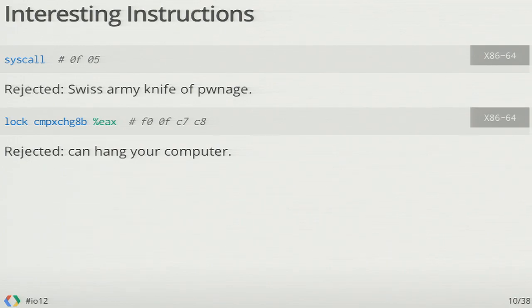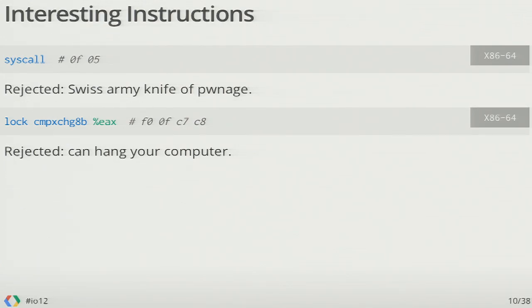Another interesting instruction — a fairly old but famous example — is the foof instruction, called because it starts with F-O-O-F. It had the nasty habit of freezing your entire computer when executed on an older Pentium. Under the hood, it applied a lock and then tried to execute an invalid instruction and never recovered and unlocked, so your entire CPU hung up. From a web perspective, do you really want to surf to a web page and have to power cycle your computer? So these classes of instructions we want to blacklist — if we encounter them in an executable, obviously the person's up to no good. Syscalls, foof instructions — we reject the binary outright and don't run it.